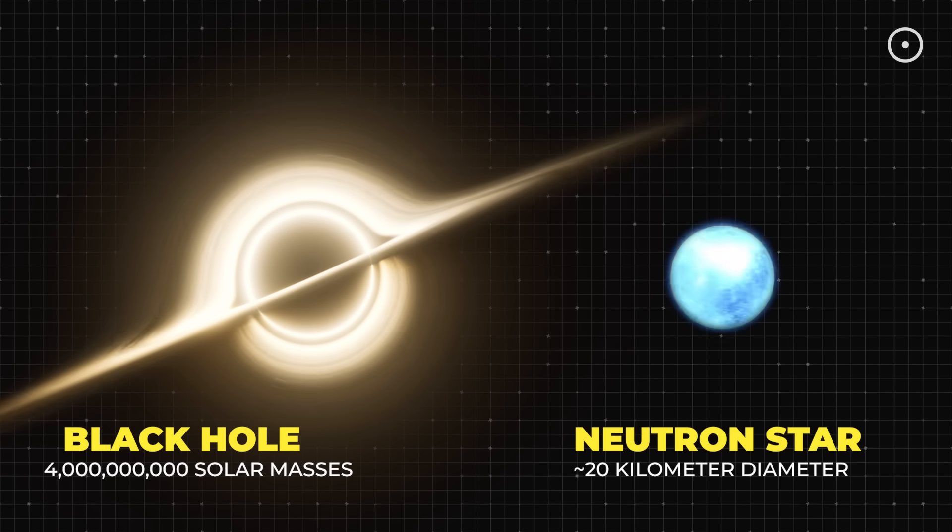And in the other corner packed into just 20 kilometers but spinning like a cosmic tornado, the neutron star. We'll break down their strengths, weaknesses and mind-bending physics in five epic categories. Let's get ready to rumble.